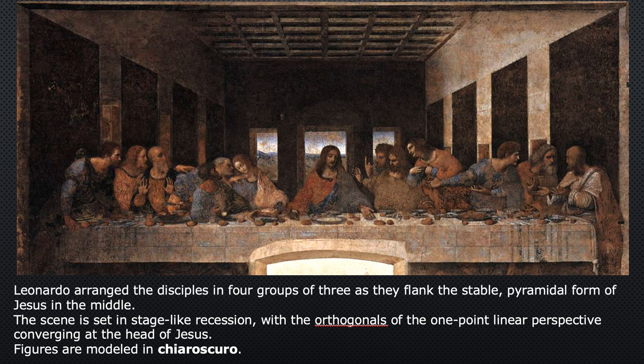The scene is set in a stage-like recession with the orthogonals of one-point linear perspective converging at the head of Jesus. The figures are modeled in chiaroscuro — the light-to-dark modeling. This is fresco, and sadly Leonardo was aware of the issues with fresco: the pigments soaked into the plaster tend to look chalky and lack the deep saturation of oil paints. He tried to overcome that by adjusting his fresco formulas, but it was unsuccessful — the paints were peeling off even before he finished. The wall has been heavily restored, and it's quite possible none of the paint was actually applied by Leonardo himself.